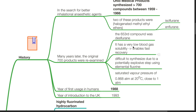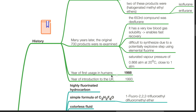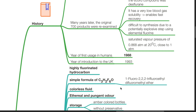Desflurane has a very low blood gas solubility and it has been predicted to enable very fast recovery from anesthesia. However, it is very difficult to synthesize due to a potentially explosive step using elemental fluorine. Saturated vapor pressure of desflurane is 0.868 atm at 20 degrees Celsius, which is close to 1 atm. Year of first usage in humans is 1988 and year of introduction to the UK is 1993.